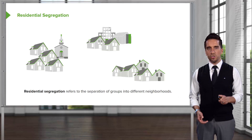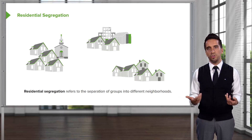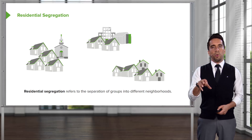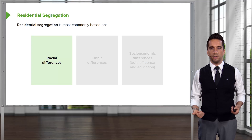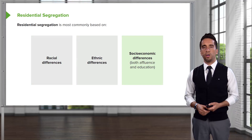Let's get into spatial inequality. Where do you live? Who's around you? And is that really equitable? Residential segregation refers to the separation of groups into different neighborhoods. We're going to look at what are some of the drivers behind that. Residential segregation is most commonly based on three main drivers: the first and probably the most obvious would be racial differences, the second ethnic differences, and third is socioeconomic drivers or differences — things like affluence and education.